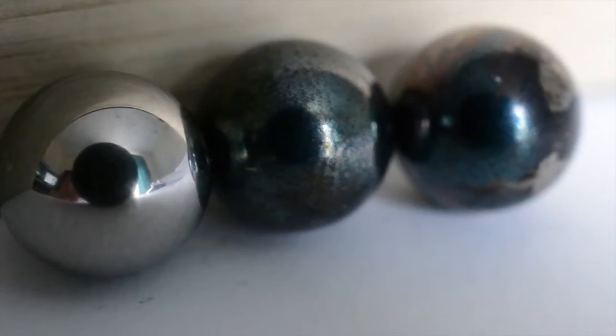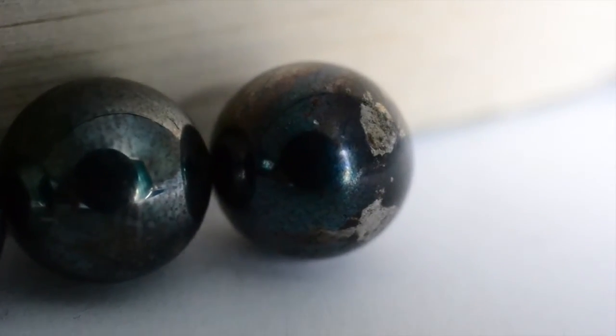After a quick clean and polish, you can clearly see how the bearings have changed after a single burning. Turned from silver and reflective, they become speckled with black sections.